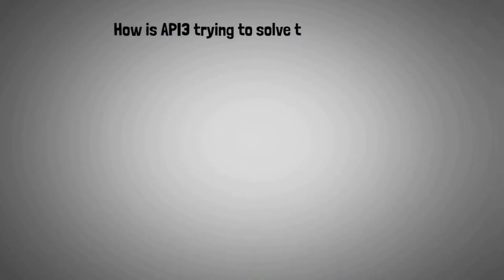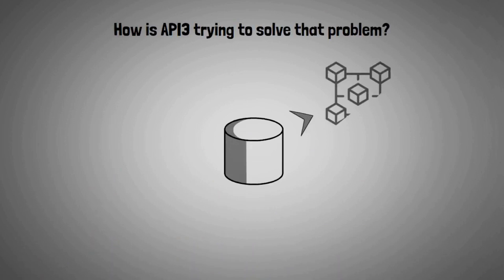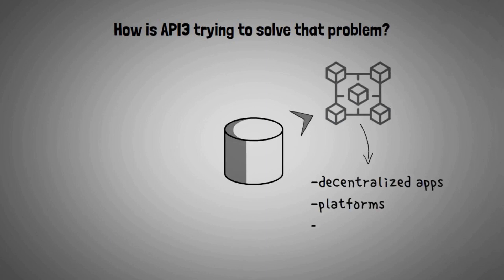So how is API3 trying to solve that problem? Providing accurate external data to on-chain environments is an essential element for creating powerful decentralized apps, platforms, and marketplaces.